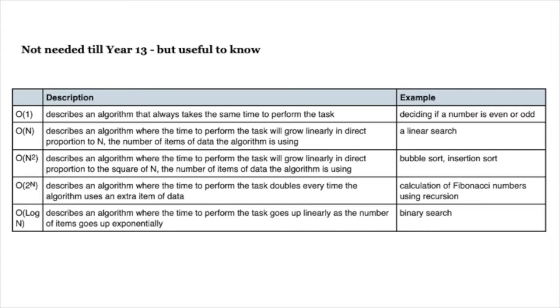For example, if you do have a short list, then you might want to use the O(n²) algorithm because it's quicker. So do pause the video and have a look at the examples and the description of each type of O, and do remember that we don't necessarily need to know all of this till year 13, but if you're interested, you can start looking it up right now.